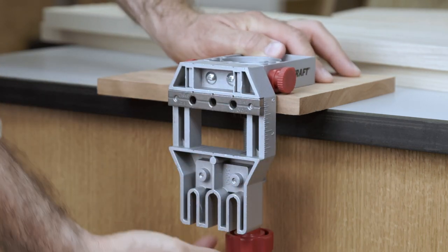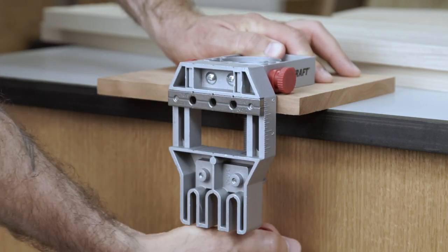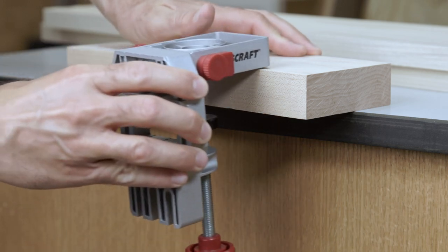Each hardened steel drill block is adjustable to accept and align centered dowel holes on boards from half inch up to three inches.